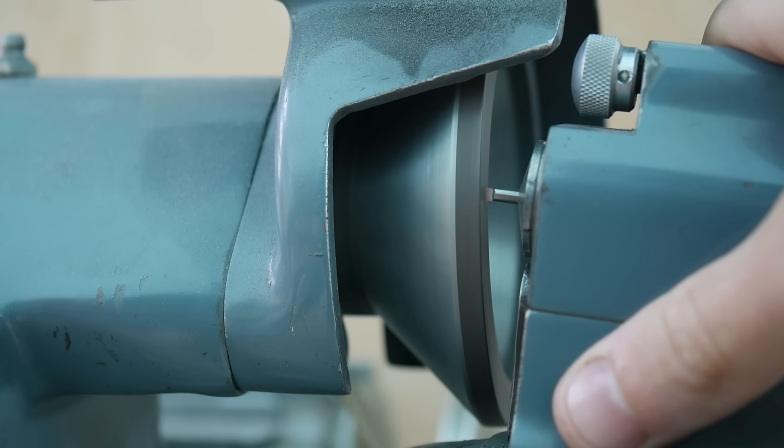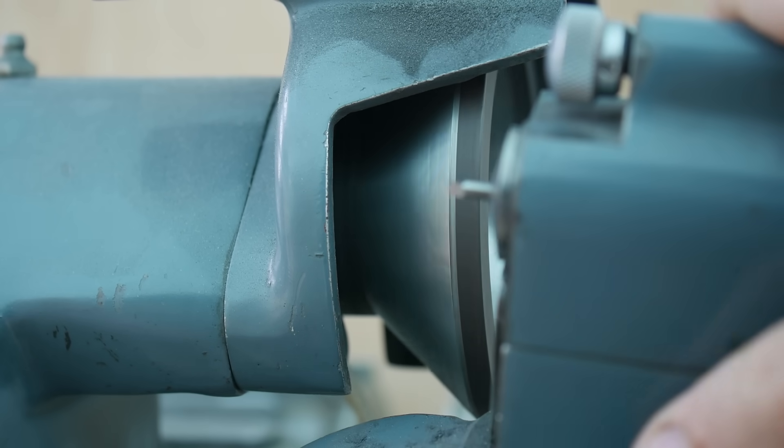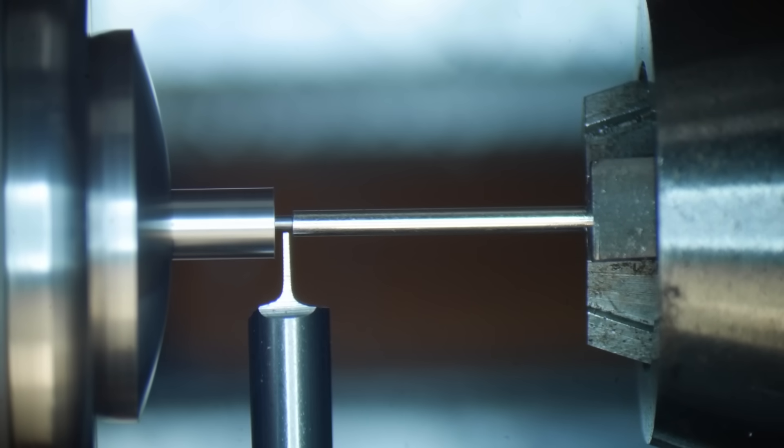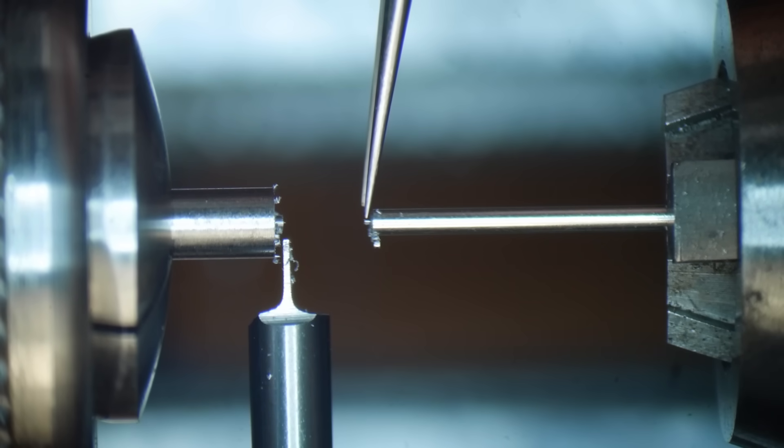To part off the finished component, I ground a micro parting tool. But here you can see a problem. The parting tool left a small pip in the center of the test component. This is normal, but at this scale, I don't have the option to turn the part around to face it off, which is the normal procedure.